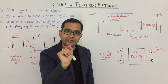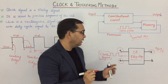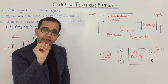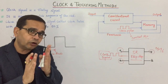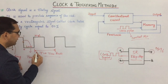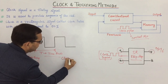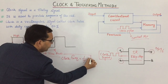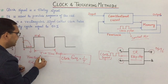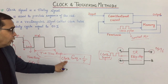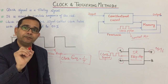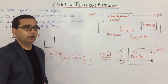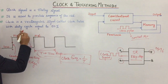By varying the clock frequency we can decide the speed of any circuit. Clock frequency is 1 divided by the time period T. So by varying the clock frequency, we can control the speed of the circuit. This rectangular signal, which we call the clock pulse, has a duty cycle of 50%.